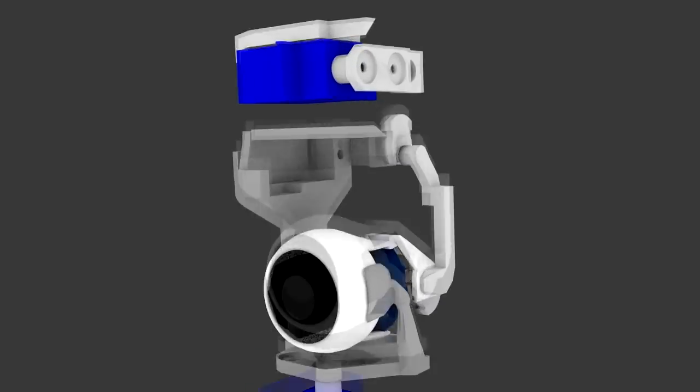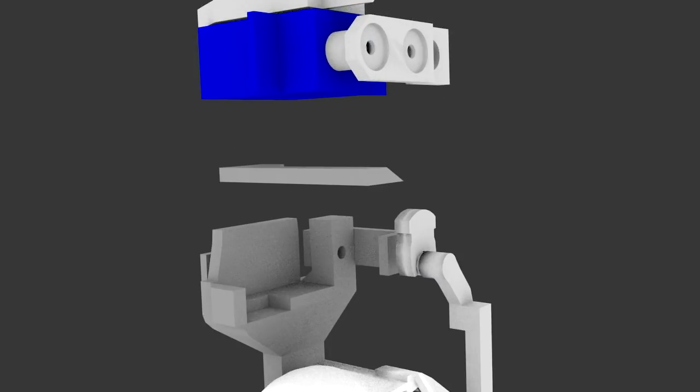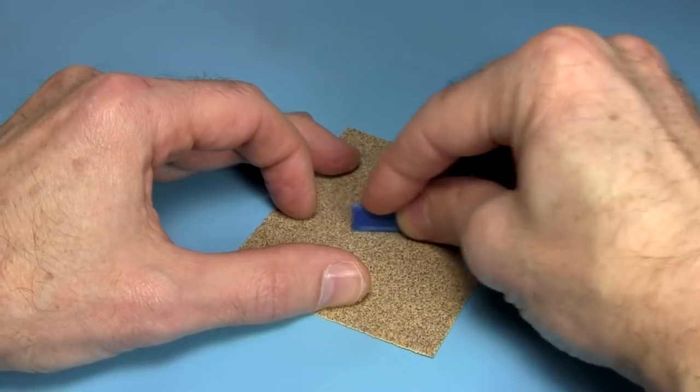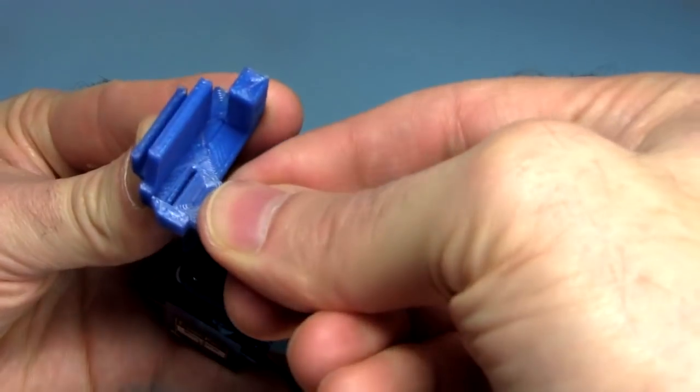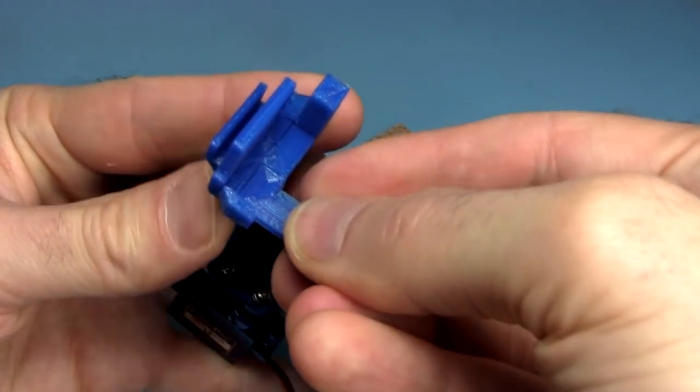Next, I need to attach the bottom stop for the eye support structure. Because I print it with no raft under it, the edges of one side flare out a bit. So I sand them, until it's a snug fit in the hole that's there for it in the structure.